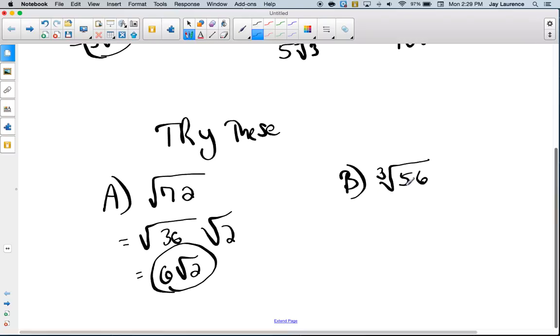Okay. B, I need perfect cubes. I'm thinking 8. I'm thinking the cubed root of 8 times the cubed root of 7, which will give me, well, not 3, silly Mr. Lawrence, which will give me 2, the cubed root of 7 times the cubed root of 7. There we go.